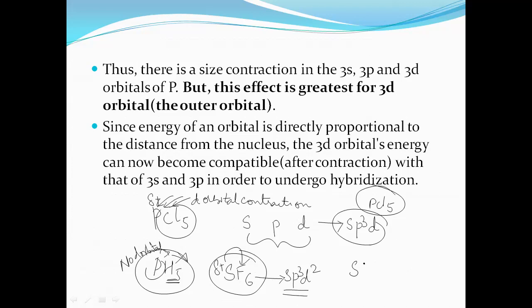Similarly, SH6 does not exist because hydrogen has lower electronegativity compared to sulfur, so there is no d-orbital contraction.